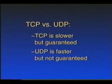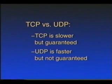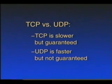Finally, when comparing TCP and UDP, we find TCP is slower but arrival is guaranteed, whereas UDP is faster but delivery is not guaranteed.